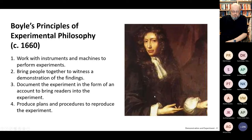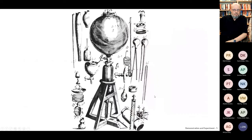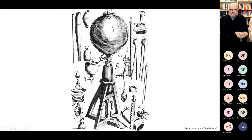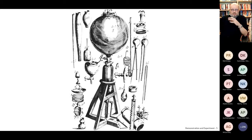Boyle and Hooke published plans to build this instrument — a glass ball with a pump that sucked the air out and a valve to let air back in. They did all kinds of interesting things. They put in lit candles and the candles went out. They put in small animals — mice — and after a few minutes the mice started to convulse and then died. There are accounts of all these experiments in their writings.